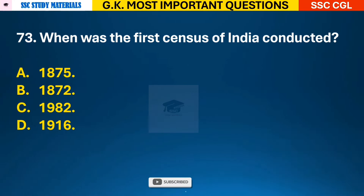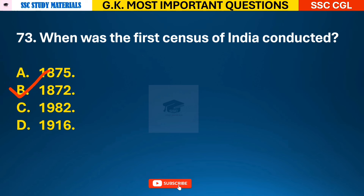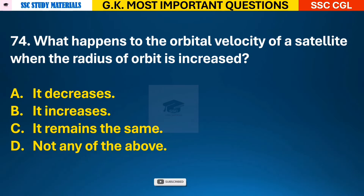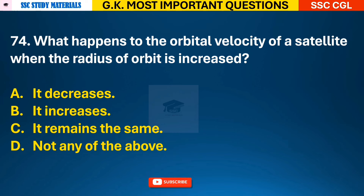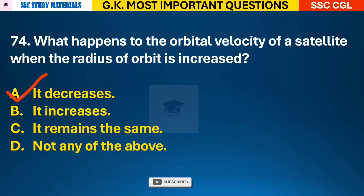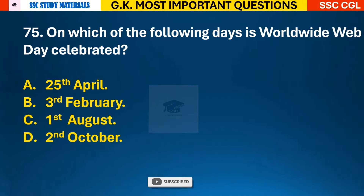Question 73: When was the first census of India conducted? Answer B - it was conducted in the year 1872. Question 74: What happens to the orbital velocity of a satellite when the radius of orbit is increased? Answer A - it decreases.